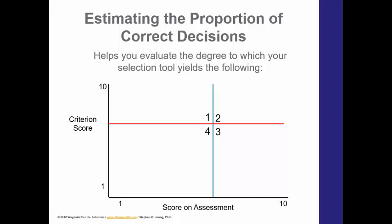We do this by mapping out different candidates and putting them into different quadrants. On the bottom x-axis, you'll see the score on the new assessment. On the y-axis, you see the criterion score, which is the performance evaluation score. What we'll be doing is placing the current employees — because we're going to be doing what's called a concurrent validation — into one of these four quadrants.